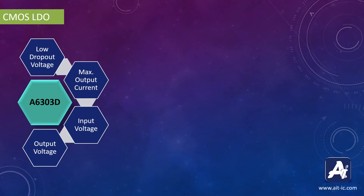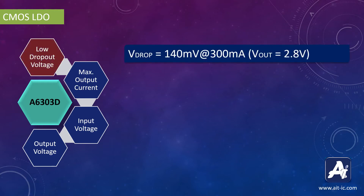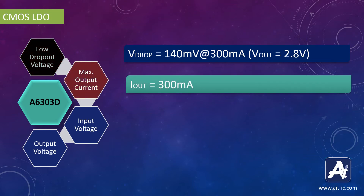Let's see the features of A6303D on the power side. This device has a very low dropout voltage of 140mV at 300mA. When the output voltage is at 2.8V, the maximum output current of this IC is 300mA.